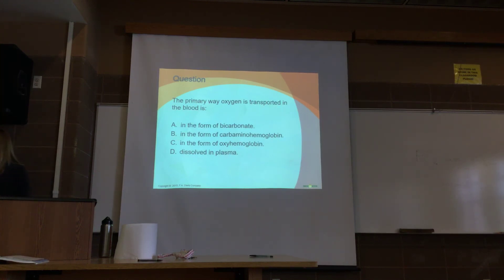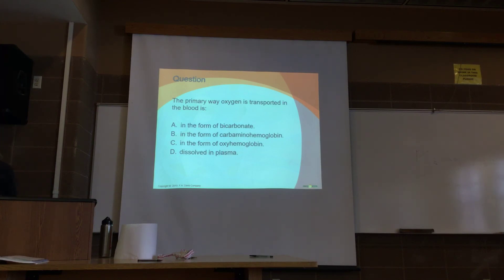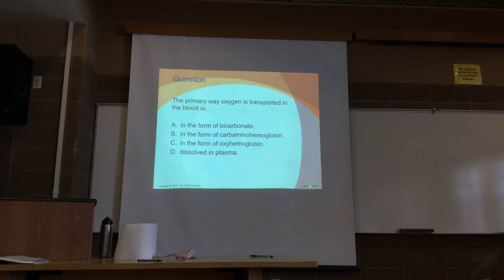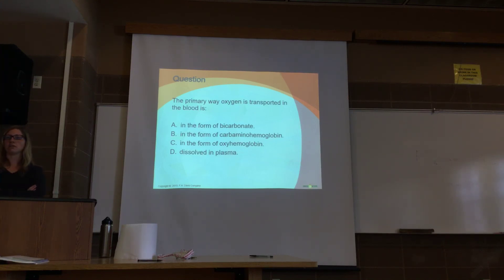Review: The primary way oxygen is transported in the blood is as oxyhemoglobin. The primary way CO₂ is transported in the blood is as bicarbonate — 20% is carbaminohemoglobin, but the majority is bicarbonate. We are done with the respiratory system.